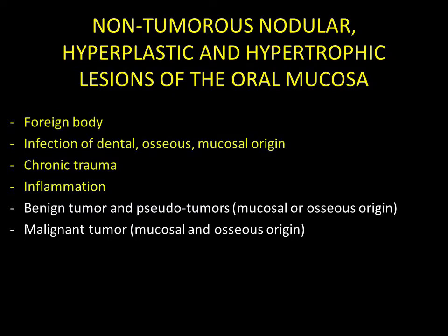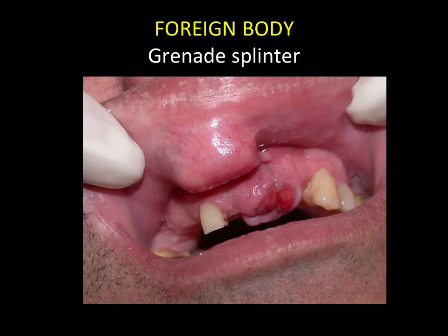Foreign body inclusions. This is an example of a foreign body in the lip — a grenade splinter that the patient did not consider pathological. It doesn't cause any discomfort. The fragment is completely encysted, asymptomatic. Its exeresis is unnecessary.